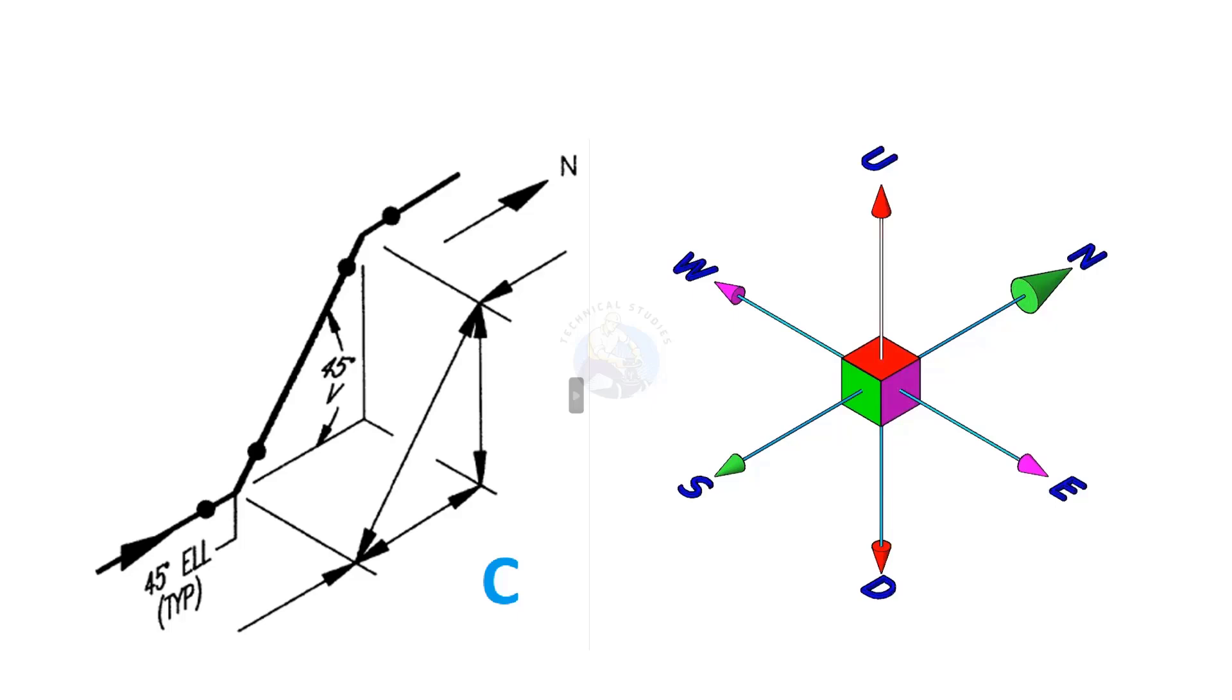In this drawing, the pipe goes to the north, turns 45 degrees between up direction and the north direction.